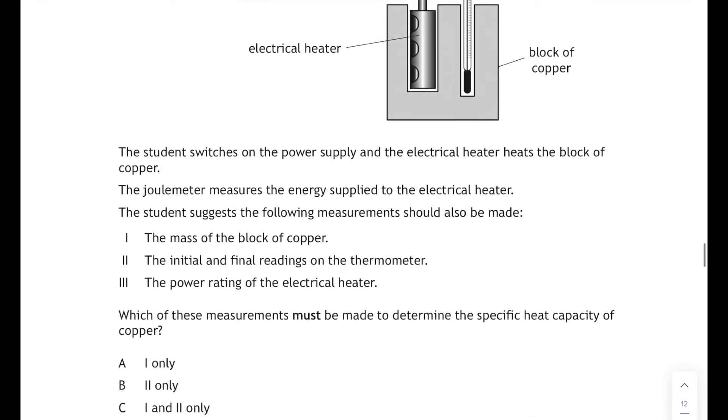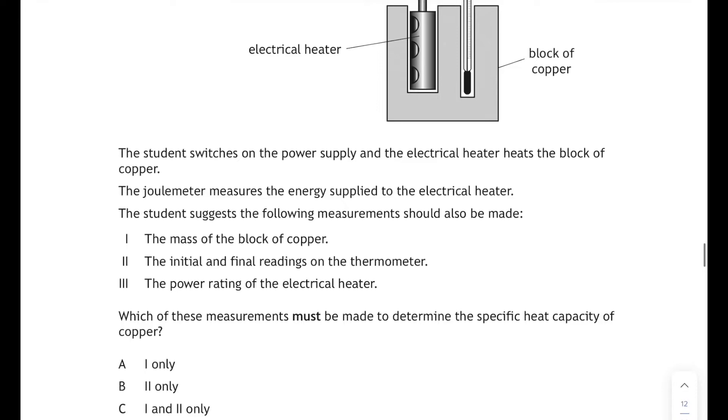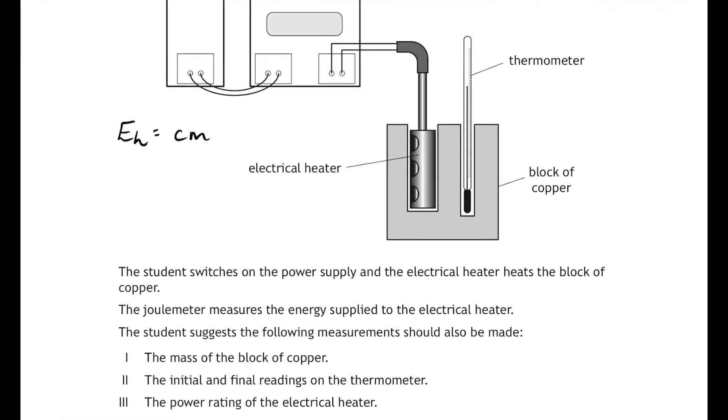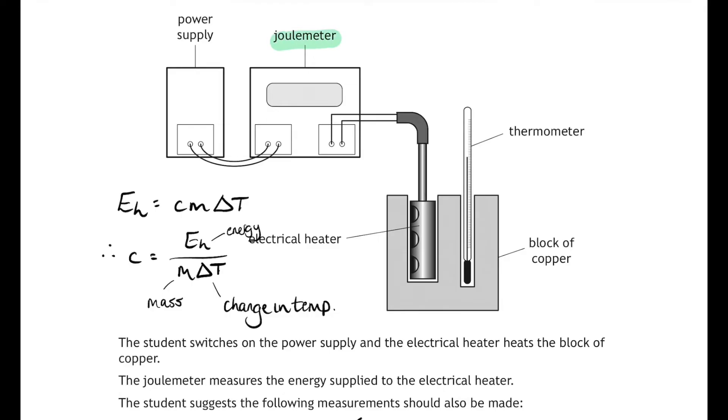The student suggests the following measurements should be made, and then we've to decide which of these measurements must be made to determine the specific heat capacity of copper. Well, let's start with our relationship here. So if we go to the relationship sheet, there's our old pal E_h equals c m delta T. Let's write that down and rearrange it for c, so c equals E_h over m delta T. There's the three quantities we need to measure in order to calculate the specific heat capacity. So delta T is the change in temperature of the block, m is the mass of the block, and E_h we're already told that the joulemeter is measuring the energy supplied to the electrical heater. So the student suggests the following measurements should also be made: that will be the mass and the initial and final readings on the thermometer because that will give us the change in temperature. So it's one and two. We don't need to work out the power of the heater because we're not timing it and we know how much energy that's going to be on the joulemeter. So one and two only, that corresponds to answer C.